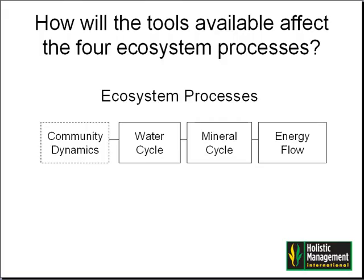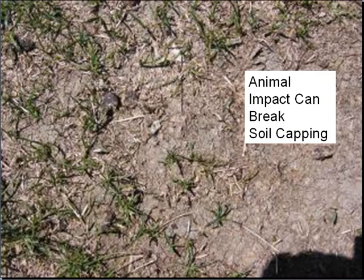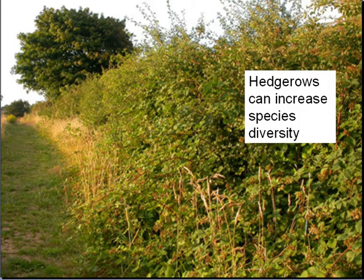How will the tools available — rest, fire, grazing, animal impact, living organisms, and technology — affect the four ecosystem processes relative to that organism's needs at its most vulnerable stage? That's important. Animal impact can be used to help cover bare ground through trampling down old standing plant material, breaking the capping and compacting the soil to provide seed-to-soil contact so new plants can grow. Living organisms can be enlisted, increasing variety of crops, for example of hedgerows and tree bolts, to increase the diversity of plants on croplands.